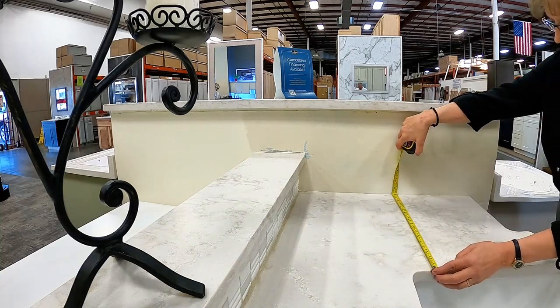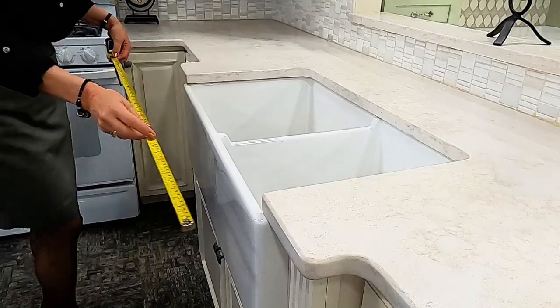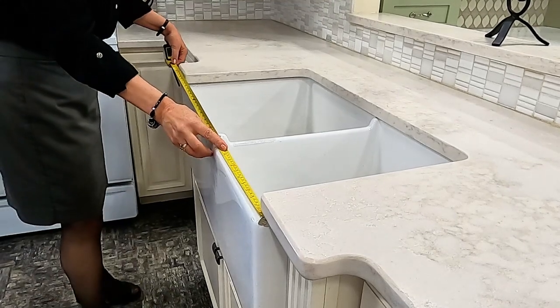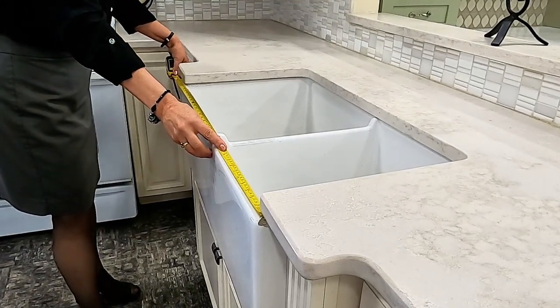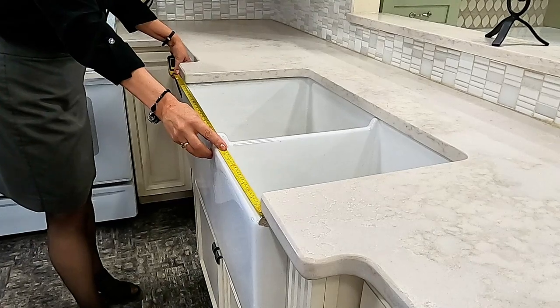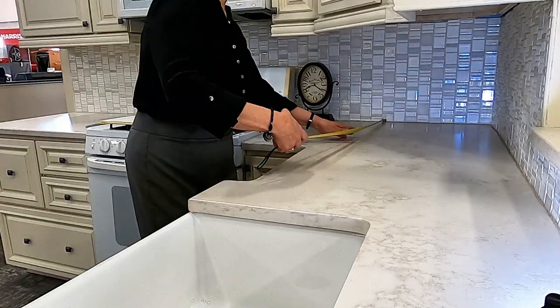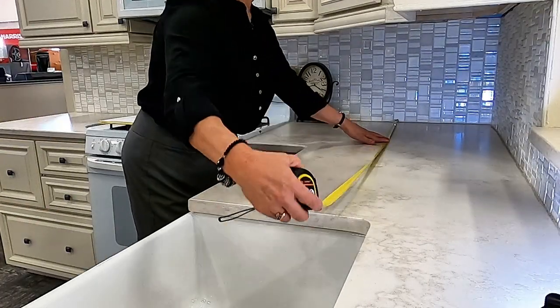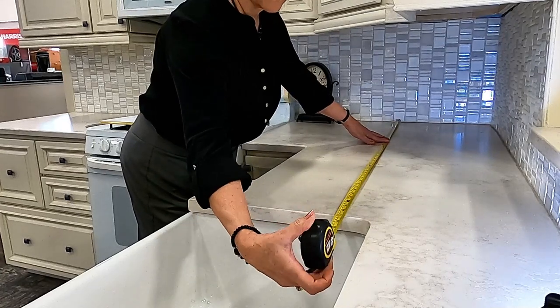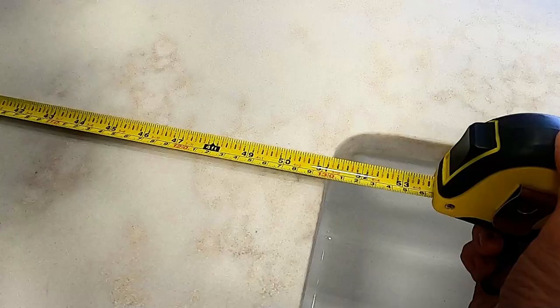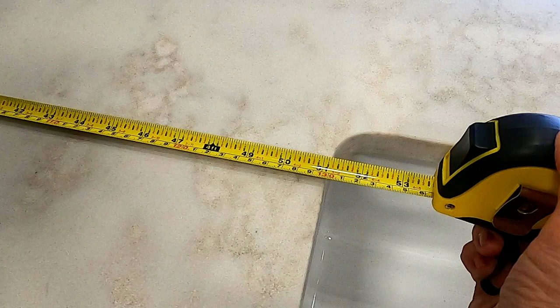Now you're going to measure from the wall to the sink, the sink itself, and now measure from the other side from the wall to the sink. This will verify that I've gotten the full length correct, so I always double check.